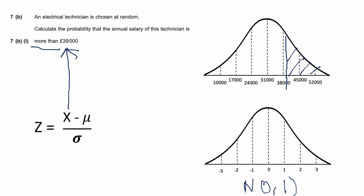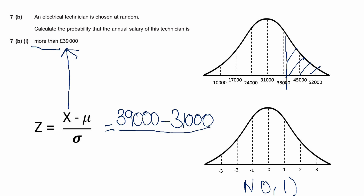Plugging the numbers in: x is 39,000, the mean is 31,000, and the standard deviation on the bottom is 7,000. Putting that all into a calculator gives z = (39,000 − 31,000) / 7,000, which comes out as approximately 1.142.